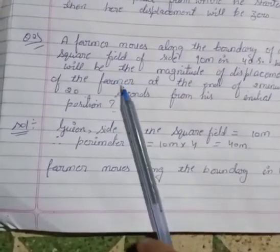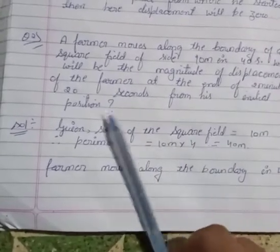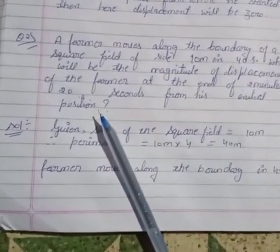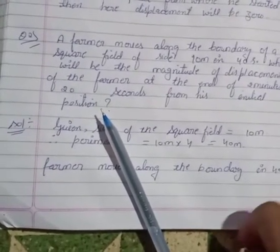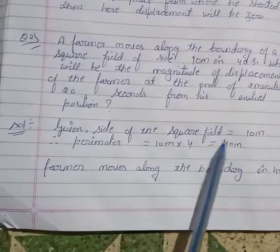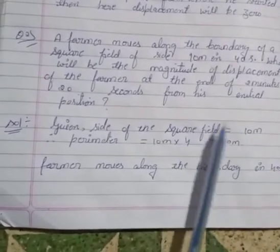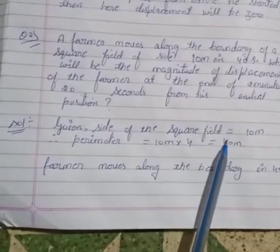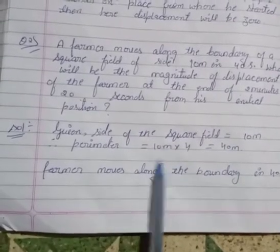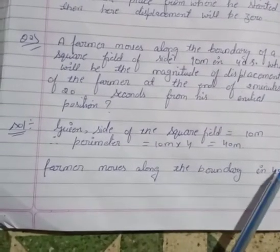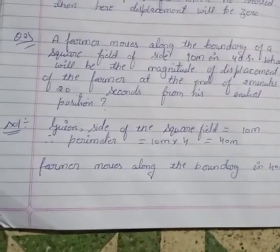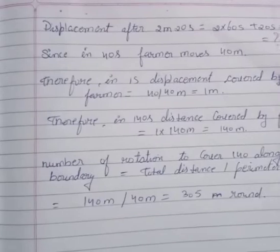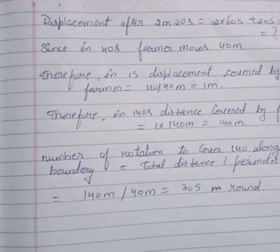What will be the magnitude of displacement of the farmer at the end of 2 minutes 20 seconds? After 2 minutes 20 seconds, we need to find the farmer's displacement — that is, whether the farmer has returned to the initial position.